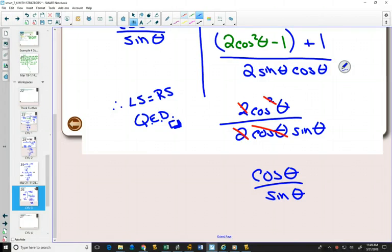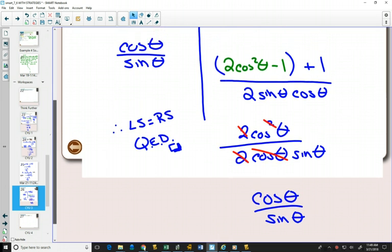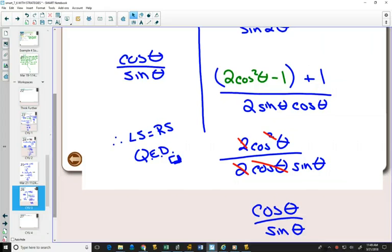So we're all done. Again, when we have double angle identities in a proof, we change them out, so we use our formula to get rid of those double angle identities. Once you've done that, then it's just simplifying like any other proof that you've had before.